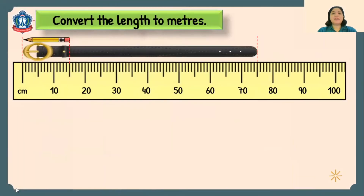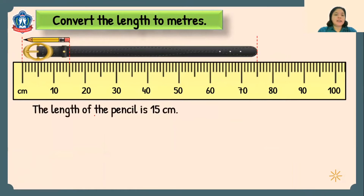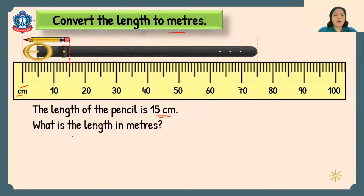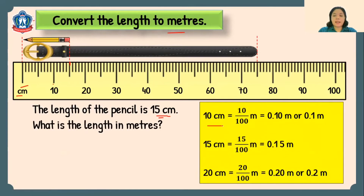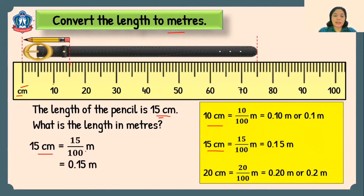Here is a pencil and a belt. Let's convert the length to meters. The pencil, as you can see, measures 15 cm. Let's convert 15 centimeters to meters. Remember that 10 cm equals 10 hundredths of a meter, or 0.10 m, which is 0.1 m. So if you have 15 centimeters, that is 15 hundredths of a meter, or 0.15 m. So 15 cm is equal to 0.15 meters.